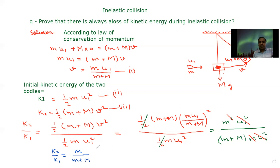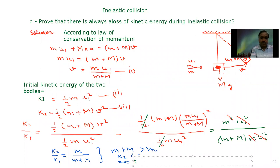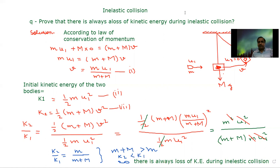This is the final result. Since (m + M) is greater than m — because capital M makes the denominator bigger — we conclude that K2 < K1. Therefore, there is always a loss of kinetic energy during inelastic collision. If you have any problem, you can ask me in the comment box. Thank you.